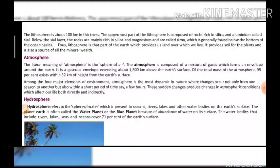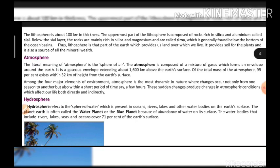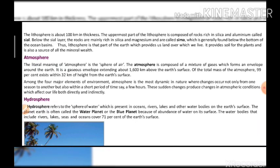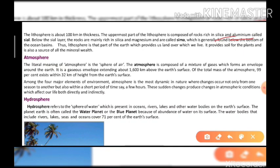The lithosphere is about 100 km in thickness. The uppermost part of the lithosphere is composed of rock rich in silica and aluminium, which is called SIAL — SI from silica and AL from aluminium. So SIAL refers to this upper rocky layer of the lithosphere.